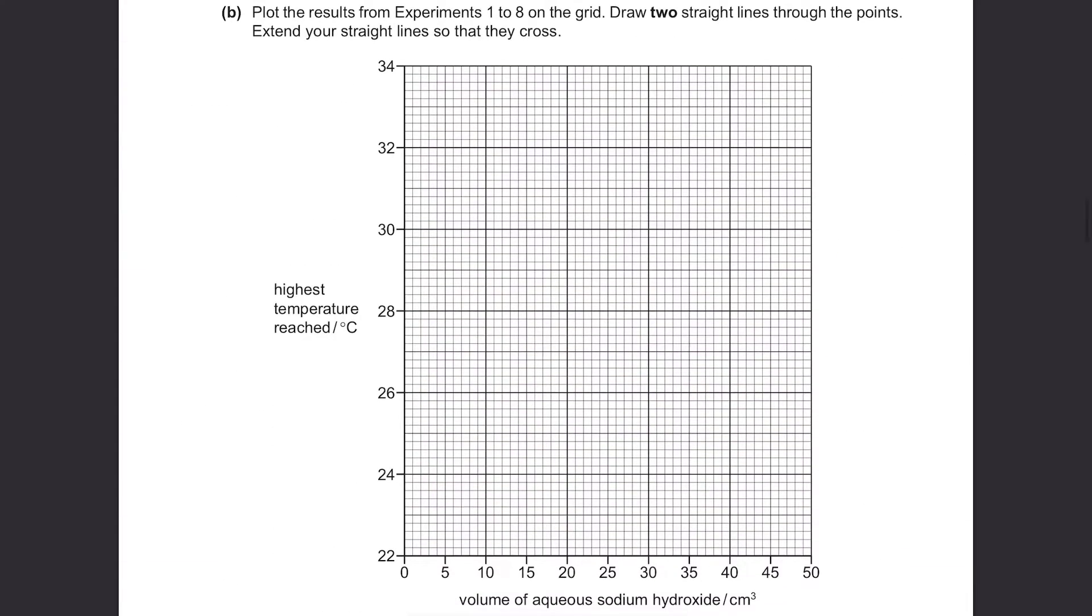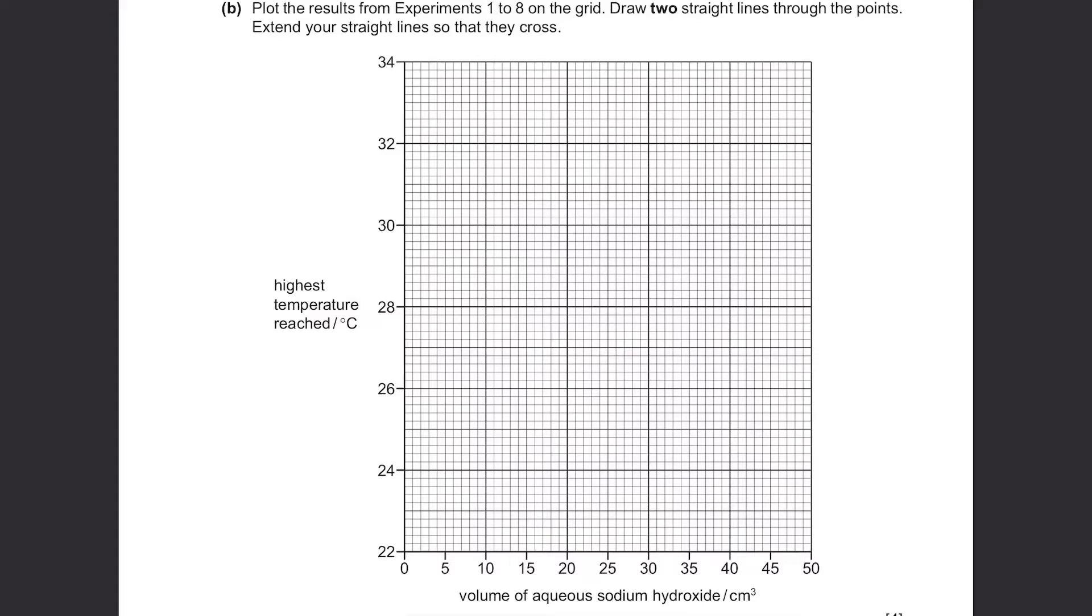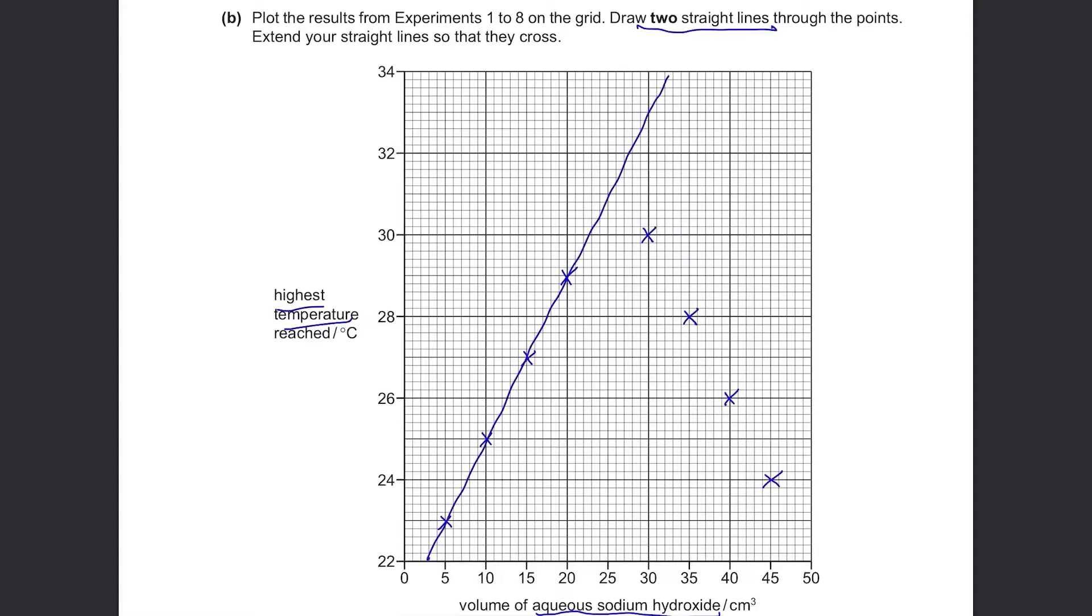Part B: Plot the results from experiments 1 to 8 on the grid. Draw 2 straight lines through the points. Extend your straight lines so that they cross. You have to plot the highest temperature reached against the volume of aqueous sodium hydroxide. Right now we won't know what kind of 2 straight lines they're talking about, so let's first plot the points. They have already put the scale for it. The points are plotted, and now it's quite obvious what kind of 2 straight lines they're talking about. One is like this, and the other one like this. Remember, we have to extend our lines so that they cross.